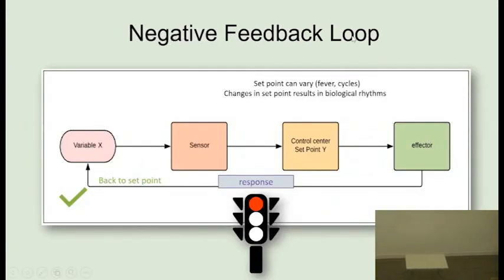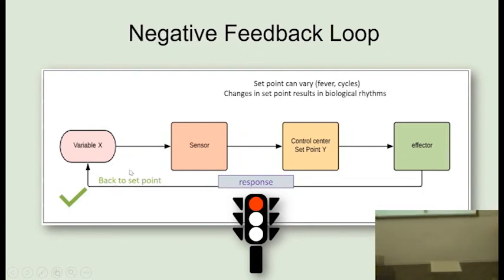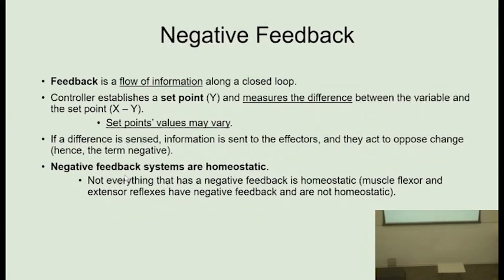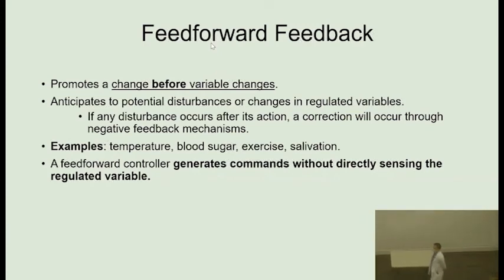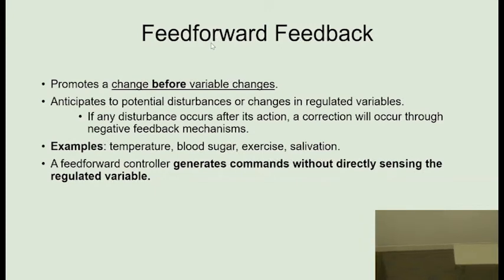For those with more visual learning styles, a diagram shows that the response is going to take the variable in the opposite direction from where it was going, back to the set point. Then we have what we call feed-forward or anticipatory feedback — mechanisms that promote a response before there is an actual change in the value of the variable. For example, if you measure your heart rate right now it might be 60, but when you drive to the gym and stand at the door, your heart rate will already be 85, because your body knows what you're going to do there.